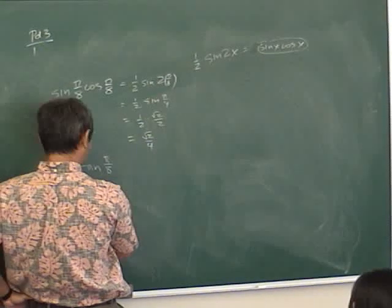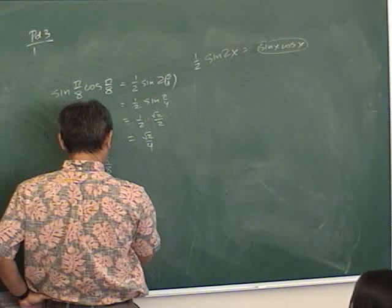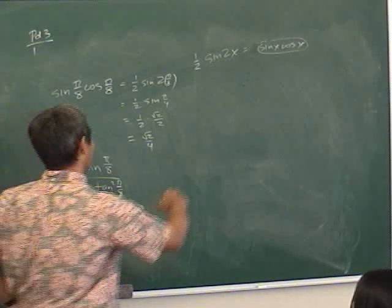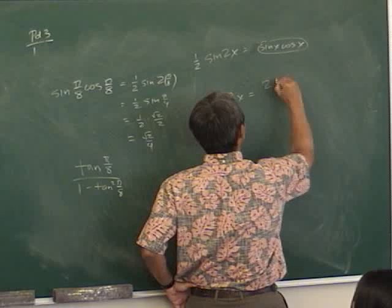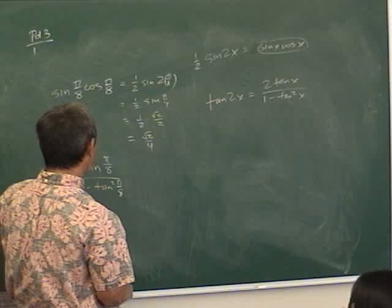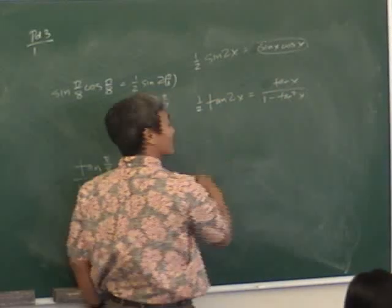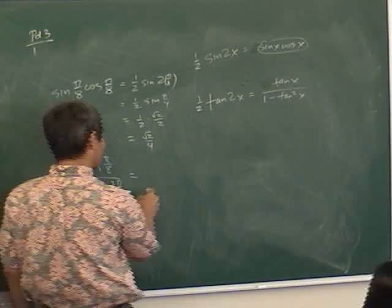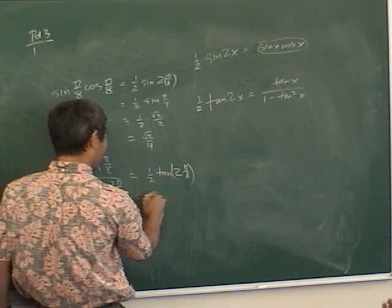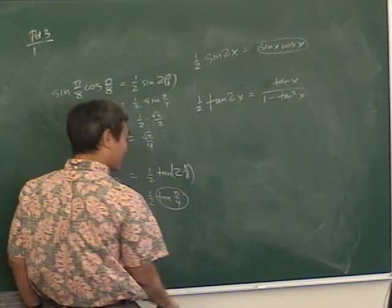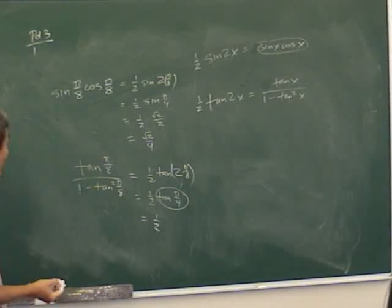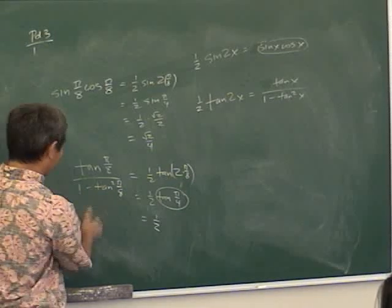What about tangent(π/8) / (1 − tan²(π/8))? That looks like the identity: tangent(2x) = 2·tan x / (1 − tan²x). So tan x / (1 − tan²x) = (1/2)·tan(2x). Plugging in x = π/8: (1/2)·tangent(π/4) = (1/2)·1 = 1/2. The answer is 1/2.